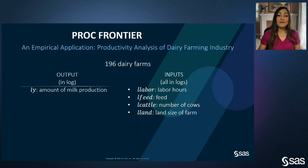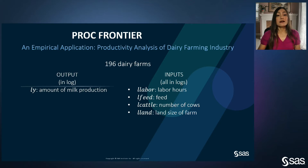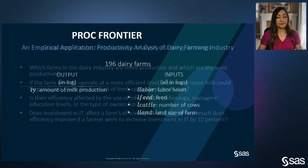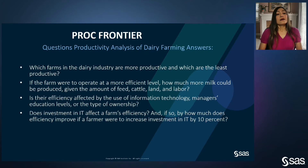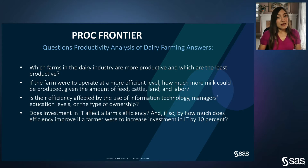Let me introduce PROC Frontier with an empirical application. I will consider the productivity analysis of dairy farming, where I'm interested in explaining the amount of milk production based on inputs: labor hours, feed, number of cows, and the size of the farm. The data are from the US Department of Agriculture's 1985 Farm Cost and Return Survey. Stochastic frontier analysis helps answer these types of questions, and in this brief example I will try to answer some of them.